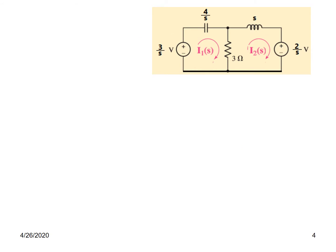This is the circuit in S domain and now let us solve it by mesh analysis. Writing the KVL equation in the first mesh, we go from one corner: minus 3 over S. Then the two elements covered by I1 give us 4 over S plus 3, multiplied by I1. Since I2 also covers the 3-ohm element, we write minus 3 I2 equals zero.